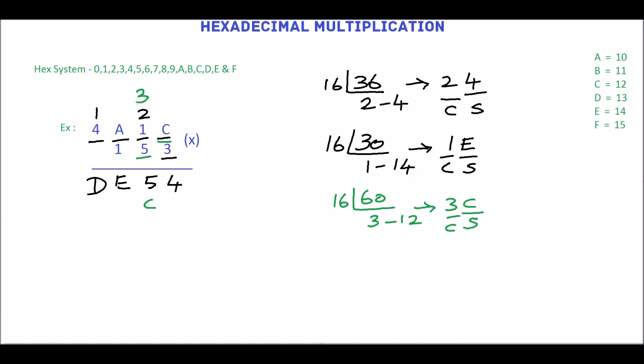Then multiply 5 by 1. 5 multiplied by 1 is 5. Then add carry 3. 5 plus 3 is 8. 8 is a valid hex number, write it as it is.